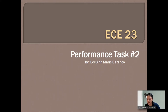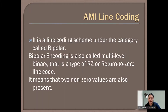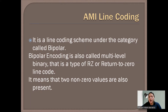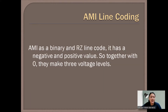AMI is a line coding scheme under the category called bipolar. Bipolar encoding is also called multilevel binary, and it is a type of RZ or return-to-zero line code. This means that two non-zero values are also present. AMI is a binary and RZ line code, and it has a negative and positive value, so together with zero, they make three voltage levels.